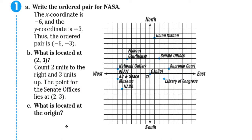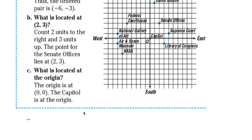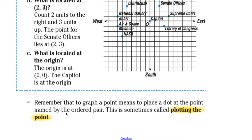What is located on the origin? The capital is located at the origin. Remember that to graph a point means to place a dot at the point named by the ordered pair. This is sometimes called plotting the point.